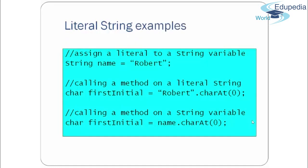Here are some examples of literal strings. We have a string variable named 'name' with the string literal "Robert". So 'name' is the variable and "Robert" is the string literal. We can also call a method on a literal string — for example, fetching the character at index 0 using charAt(). Using the variable name, we can fetch the 0th character with name.charAt(0), which gives us the first character.